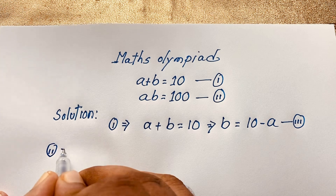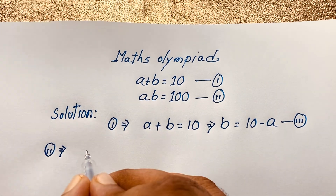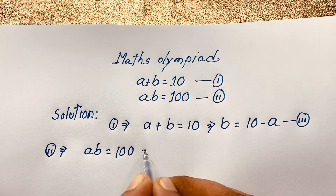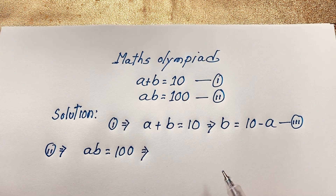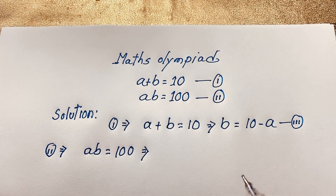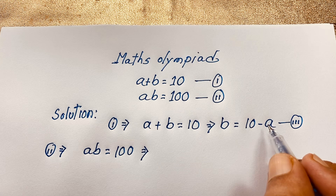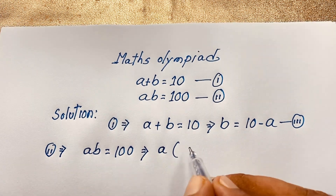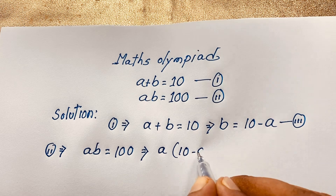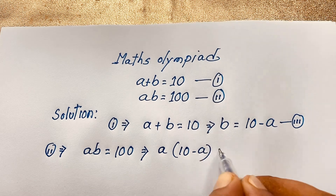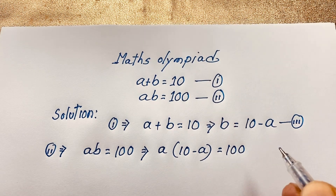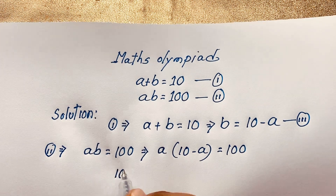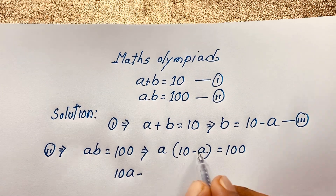Now our second equation: a times b is equal to 100. Remember, b is equal to 10 minus a, so I substitute that here. It will be a times (10 minus a) is equal to 100.